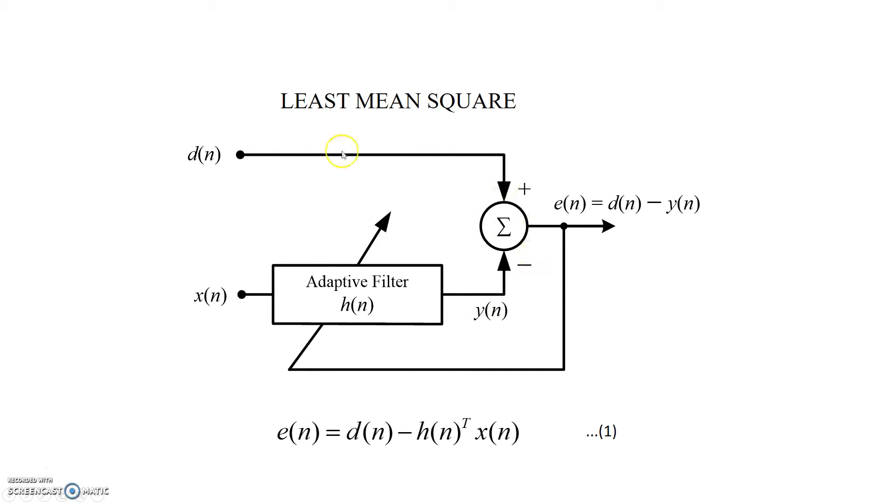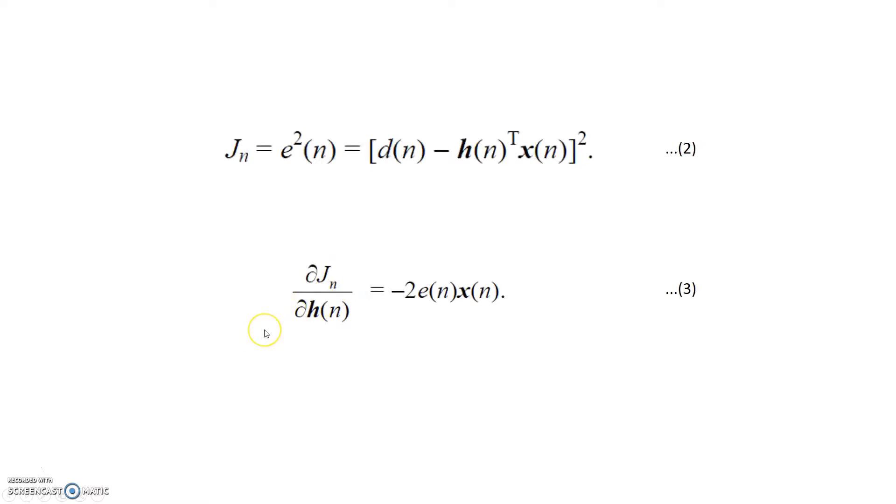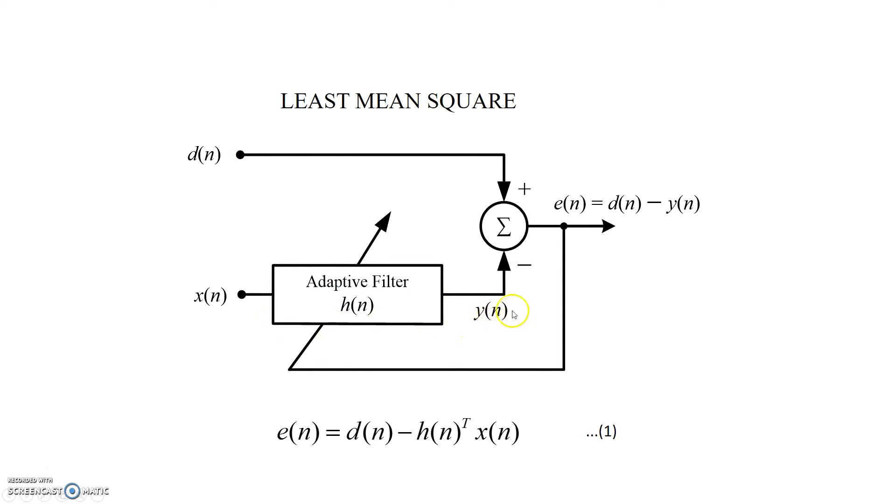The resultant difference is called error which is fed back to the adaptive filter. In that way, adaptive filter by taking the value of error decides how much variation or how much adaptation needs to be done in the coefficients.